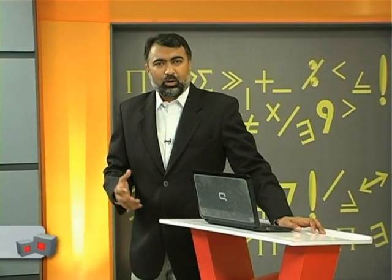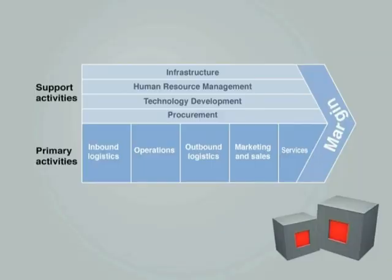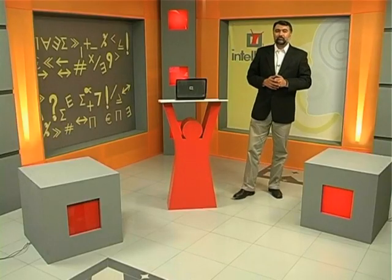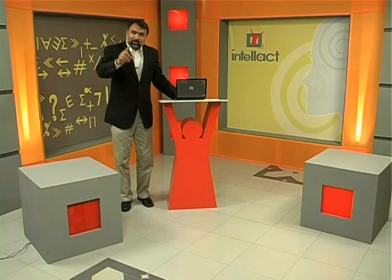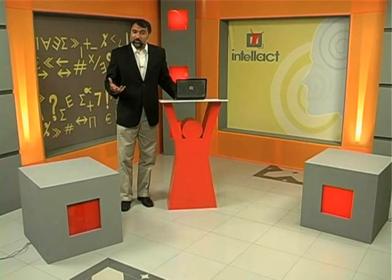Push-and-pull supply chain ka concept hume clear ho gaya. Pehle hume value chain discuss ki thi. Hume kaha tha that usually it is applied on manufacturing setups, aur jo organizations apne input ko valuable output mein convert karne ke liye kai stages se guzarti hain, Porter ne value chain define kia tha. The problem is that this traditional value chain is based on the assumption that the organization will be using push supply chain. Aaj ke dor mein agar hum pull supply chain use karna shuru kar dein, to jo value chain discuss ki thi, it won't work, it is not applicable anymore.